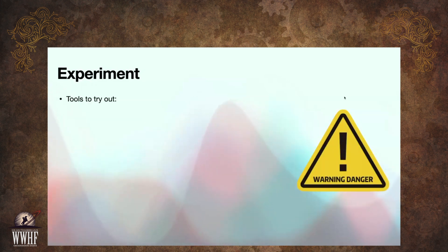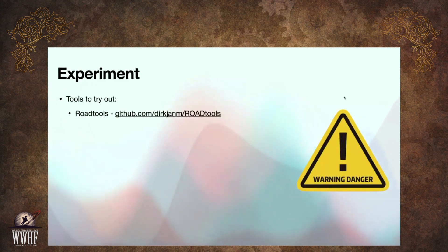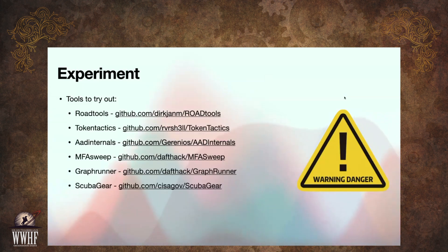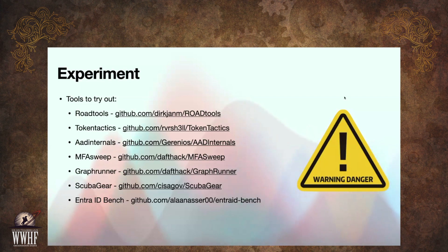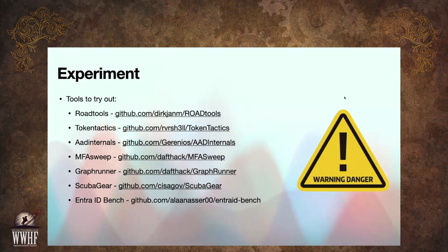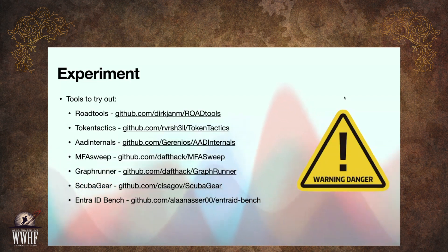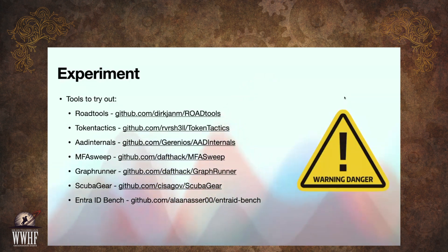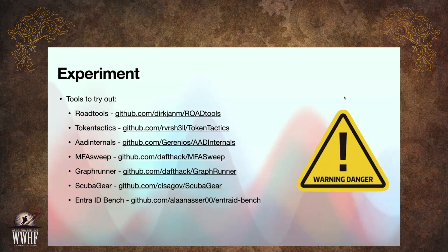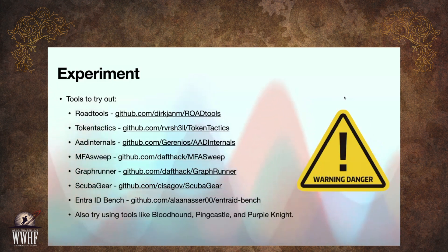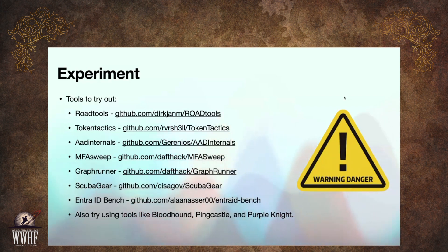In your dev tenant, try out offensive tools like Road Tools, Token Tactics, AAD Internals, MFA Sweep, GraphRunner, and Scuba Gear. The last two on the list are defensive tools — they will help you analyze an Entra ID tenant, understand what's there, and find misconfigurations. One is specifically geared toward the CIS benchmarks for Entra ID. Also check out things like BloodHound, PingCastle, and Purple Knight — they all have modules for Entra ID security.